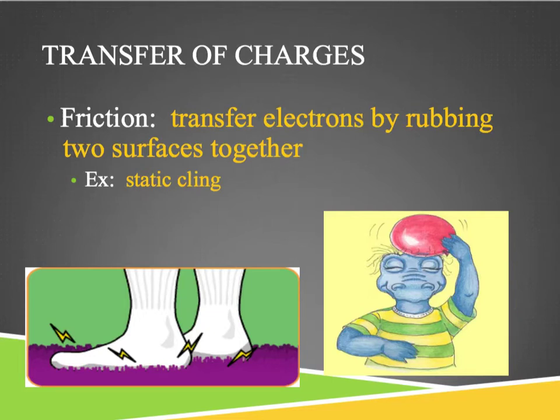There are three ways that charges can transfer. The first is friction, which we've talked about before in terms of causing heat, and the same concept applies here when electrons are transferred because two surfaces are rubbed together. You can think of static cling — if you've ever had socks on while walking across a carpet floor, it actually builds up some static because the charges are stationary on your socks as they move across the carpet.